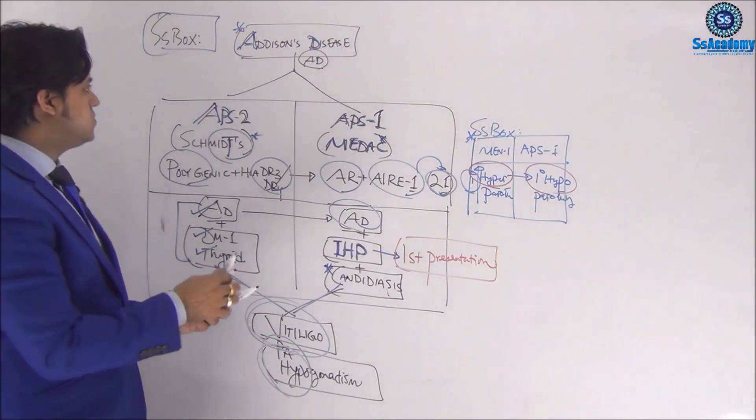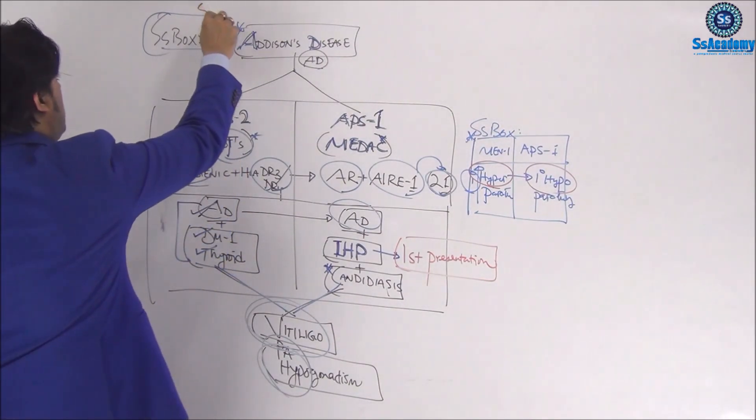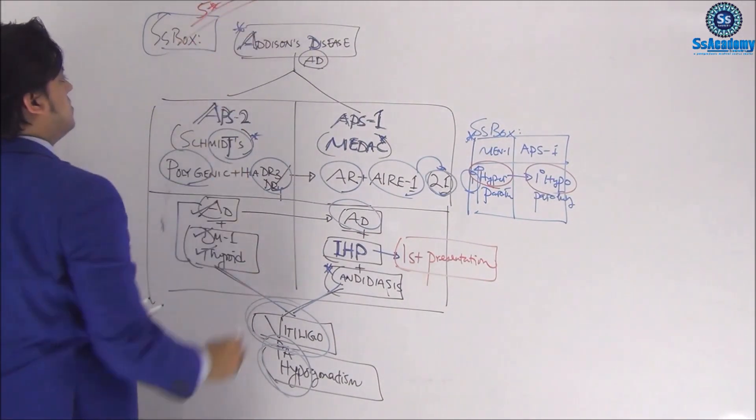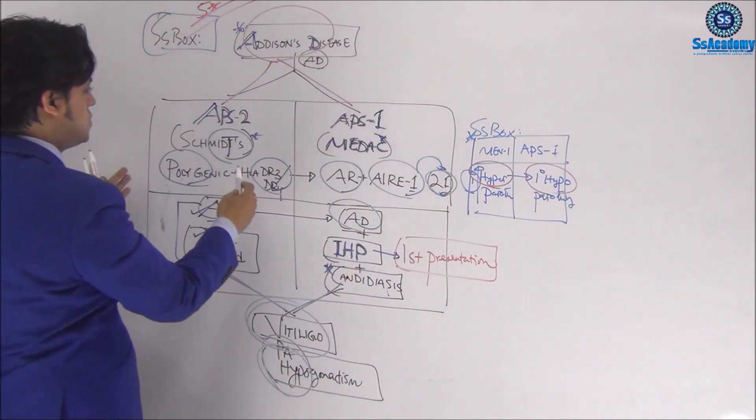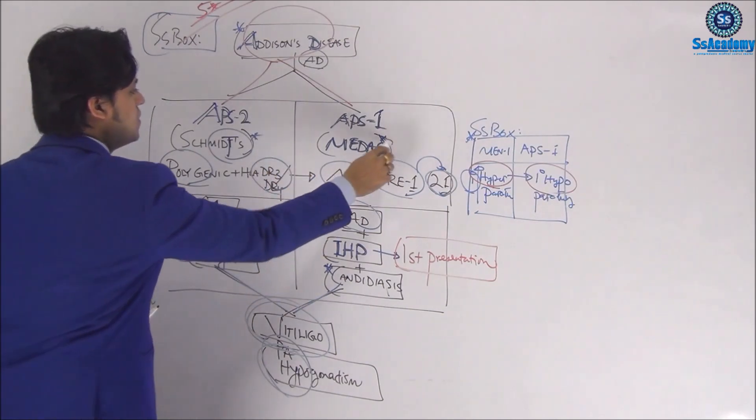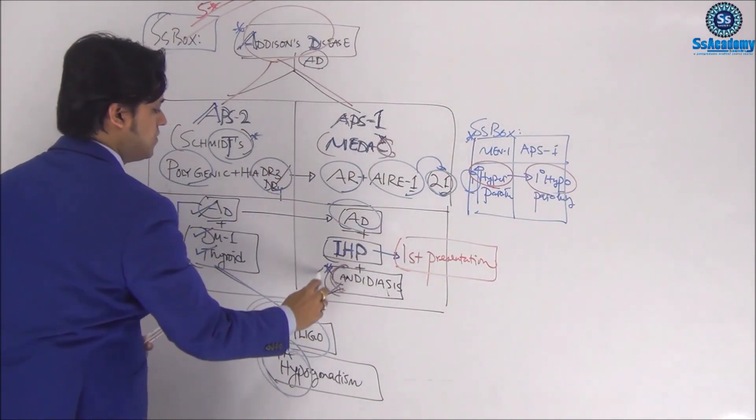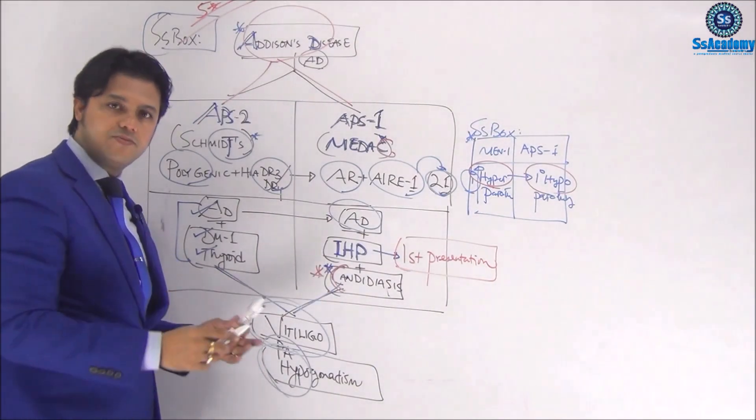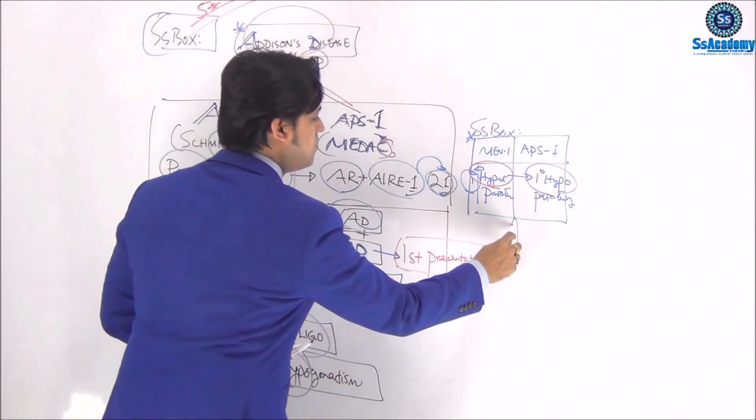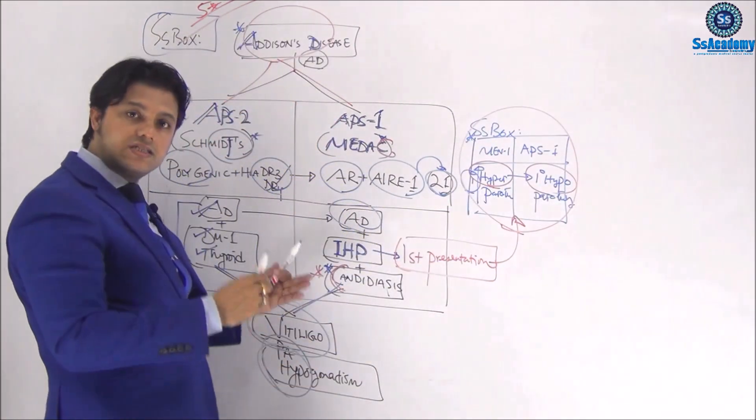This box, once again, is a five-star topic: Addison's with type 2 and type 1. Type 2 is Schmidt, type 1 is MEDAC. C for candidiasis—we must remember. But the first presentation is hypoparathyroidism. We can remember by seeing this box that MEN 1 is hyperparathyroidism...